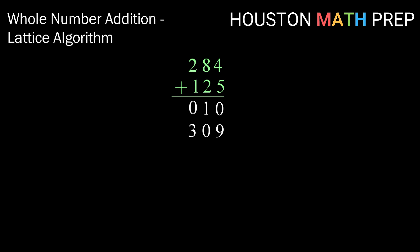Alright, we mentioned diagonals, so here's how they go in. You're going to actually draw in diagonals through our whole shape. Now those diagonals need to go from right to left. The way that we get our final digits in our answer is we sum up the numbers in each diagonal. So in the topmost diagonal, we just have a 0, so we don't need that one. But in the next diagonal, we have 1 plus 3 is 4. In the next diagonal, we have 0 plus 0 is 0. And lastly, we have that 9 hanging out all by itself. So the answer to 284 plus 125 is 409.